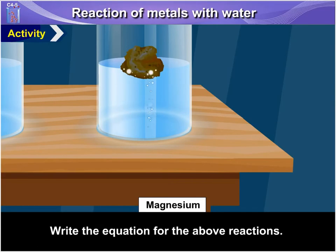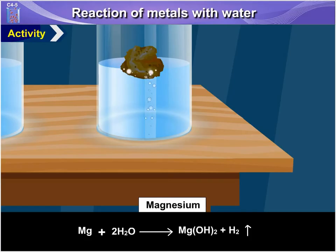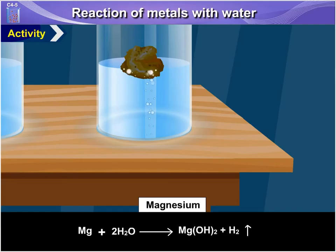The equation for the reaction of magnesium with hot water: Mg + 2H₂O → Mg(OH)₂ + H₂ gas.